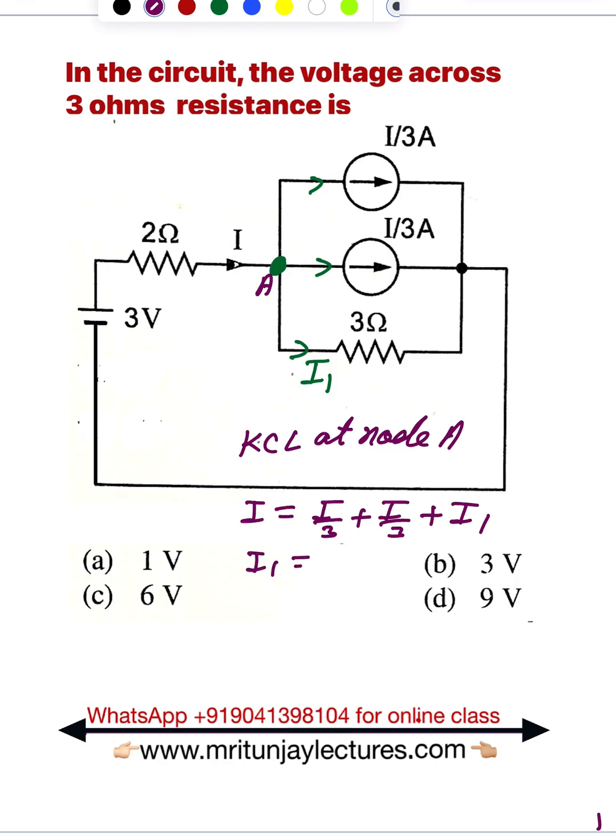I₁ is basically I minus 2I/3, so what about that value? Simply I/3. Clear?